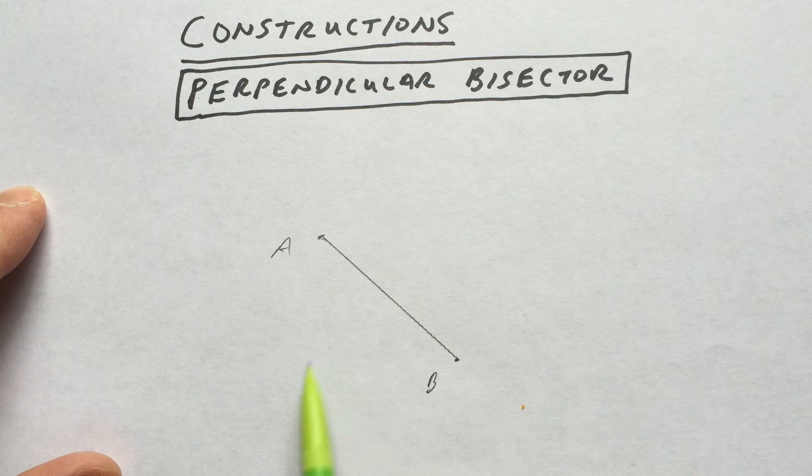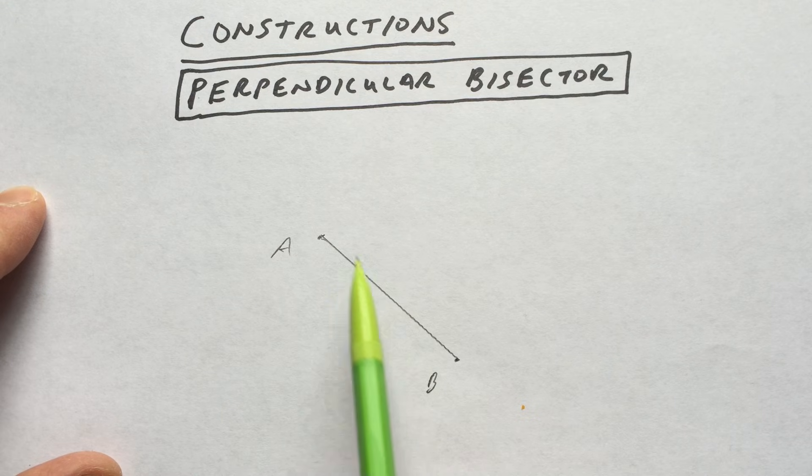What we're going to do is we want to find a line that's perpendicular, meaning at a right angle to the segment, and cuts it in half, bisects it.